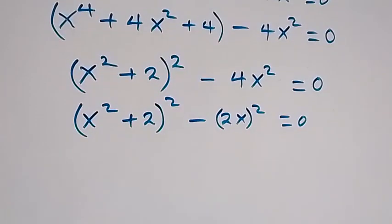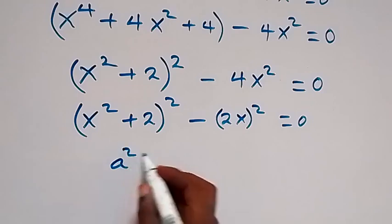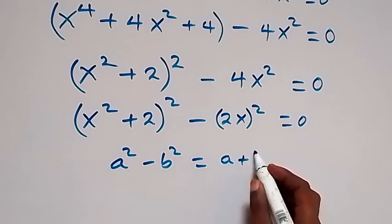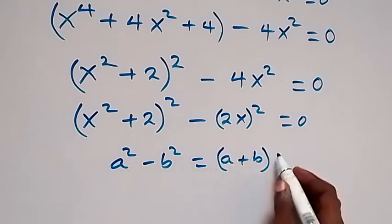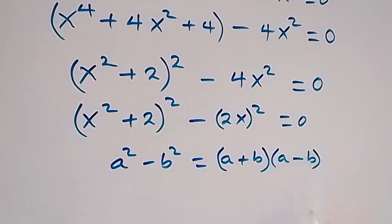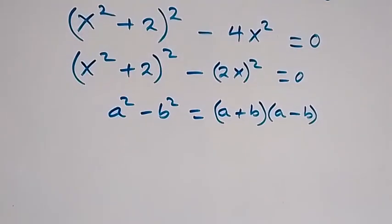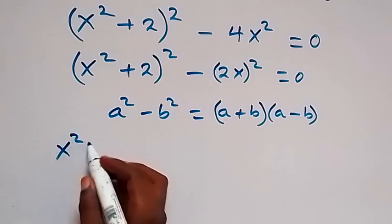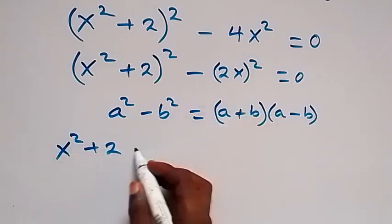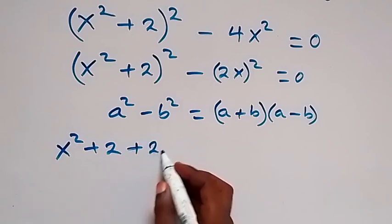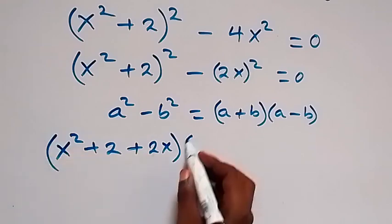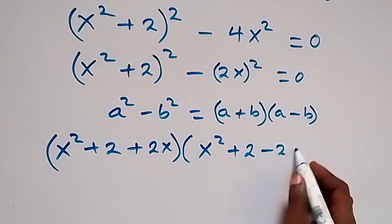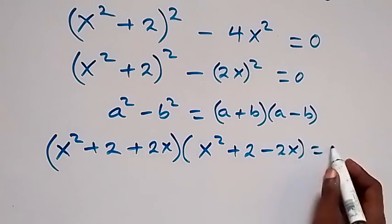This follows from the difference of two squares. When we have a squared minus b squared, this equals a plus b multiplied by a minus b. Here, a is serving as x squared plus 2, and b is 2x. So this becomes x squared plus 2 plus 2x, close bracket, multiplied by x squared plus 2 minus 2x, which equals 0.